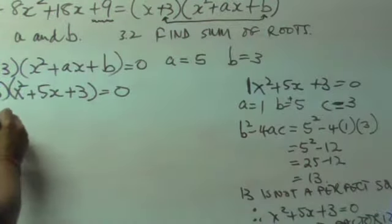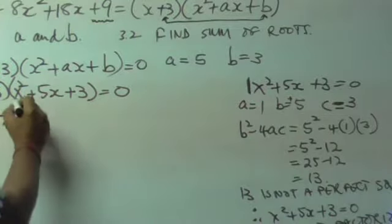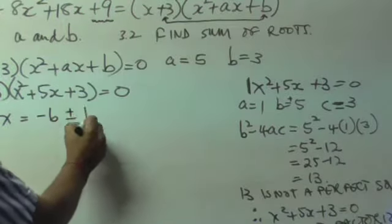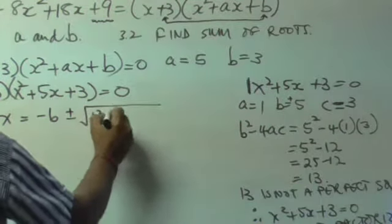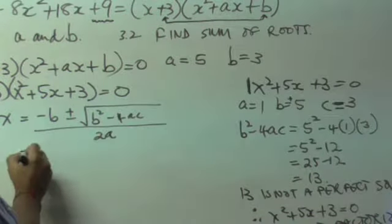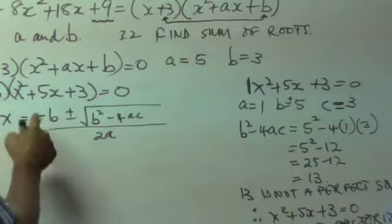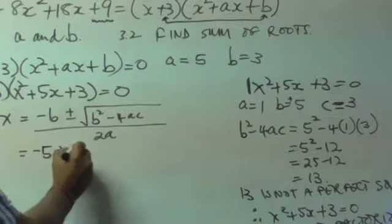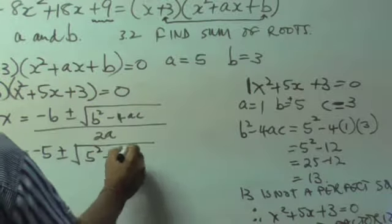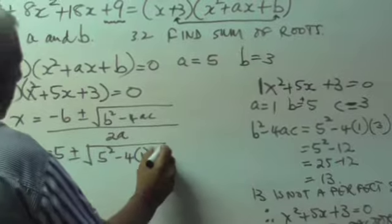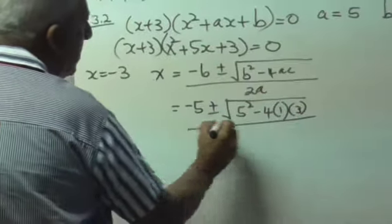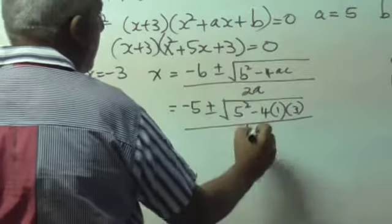Now, I'm not going to do the whole working. You will use formula on this part here. All right, let's just help you. x is equal to minus b plus minus the root of b squared minus 4ac all over 2a. Now, that will give you minus into b, which is 5, plus minus the square root of 5 squared minus 4 into a into c, which happens to be 3 all over 2 times a. a is 1.